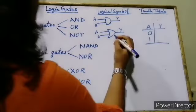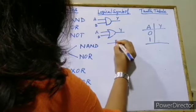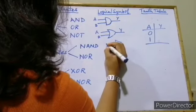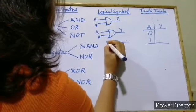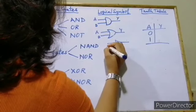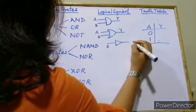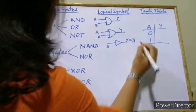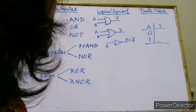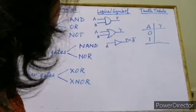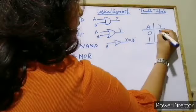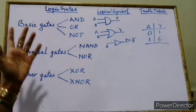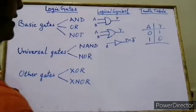The next one is the NOT gate. The NOT gate is basically an inverter. If the input is A, the output Y will be equal to A inverse — the opposite of A. If input is 0 then output will be 1, and if input is 1 then output will be 0. It reverses the logical state.